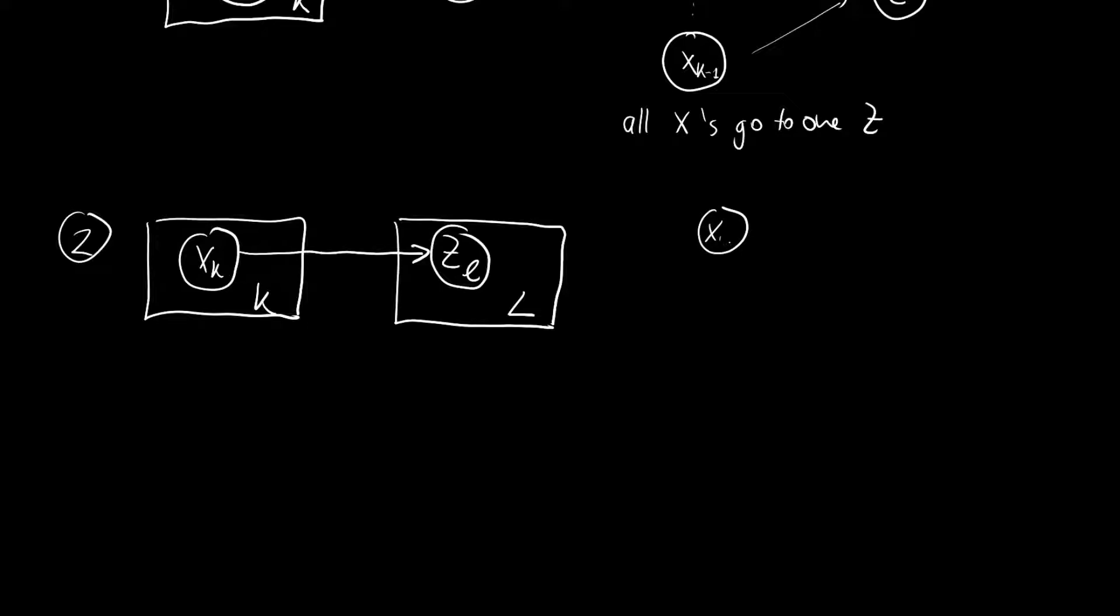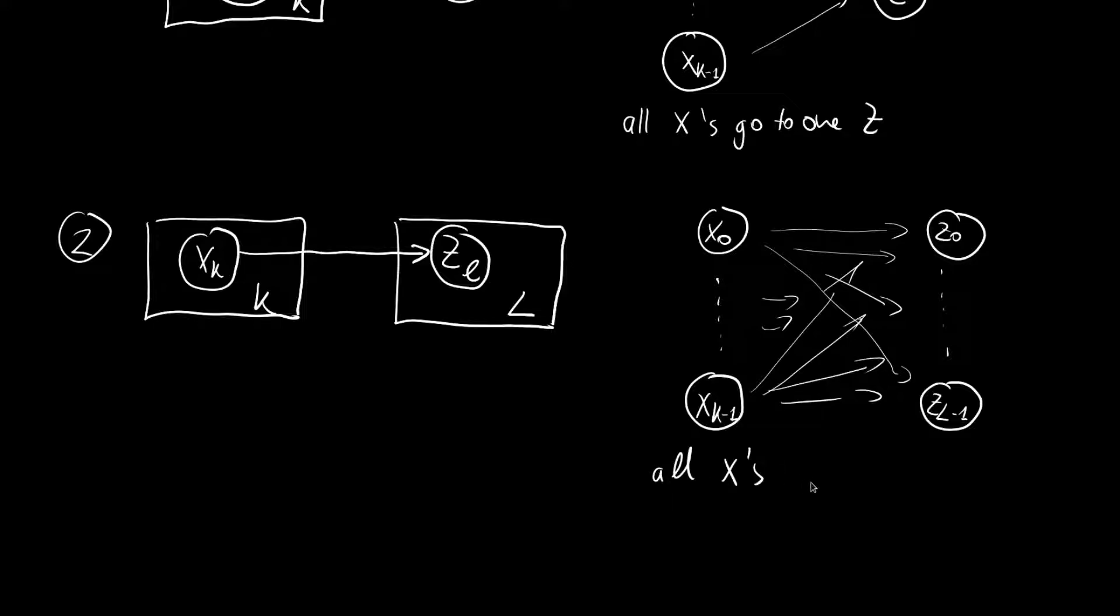So we have an x zero all the way to an x k minus one. We have a z zero all the way to a z l minus one. And the x zero is connected to the z zero and to all the others. And the same is for this and also for the others. So like a fully connected network as in a deep neural network. So all x's are connected to all z's.